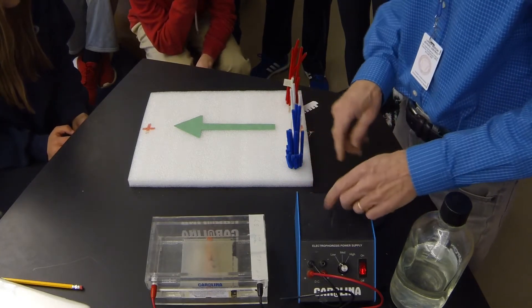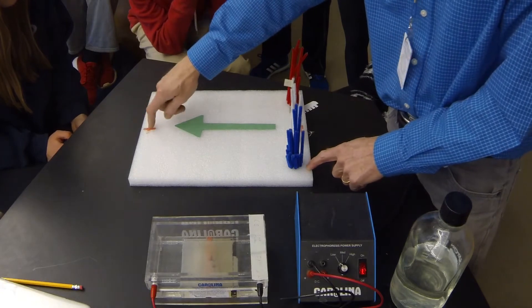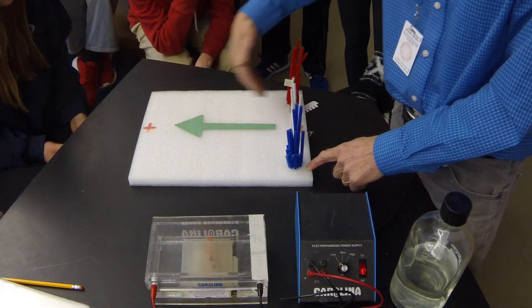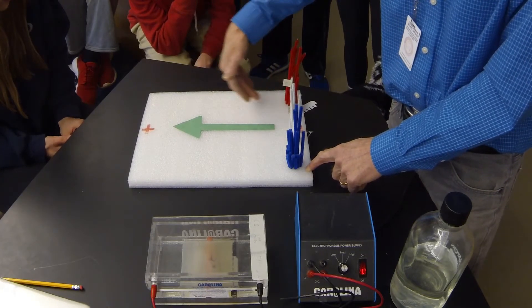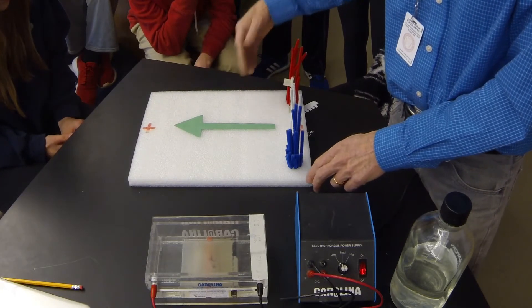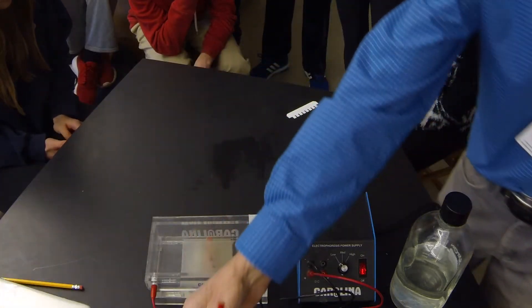So I turn on the electricity, it creates a positive end. This arrow shows you that all these fragments of DNA are being attracted to the positive end of the plate. So after about an hour, time's up, we see what the results are.